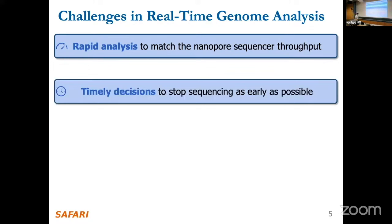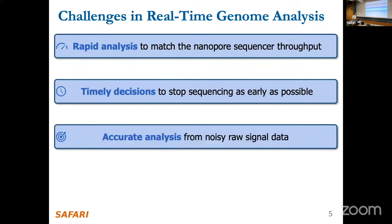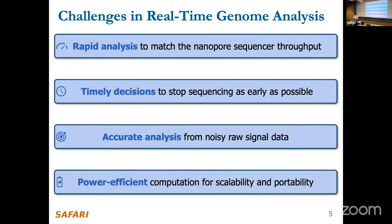We want rapid analysis with throughput that matches the sequencer, and timely decisions — stopping as early as possible. That's about latency. We also want high accuracy so we don't throw away useful data, and finally, power efficiency. The sequencer is portable — roughly the size of a clicker, running on USB power — so I don't want to carry a huge server to analyze data from it.